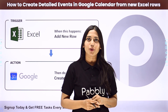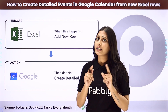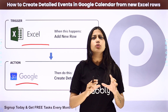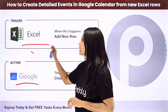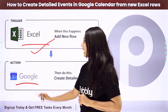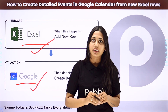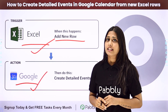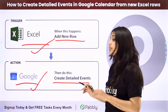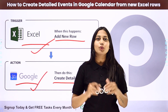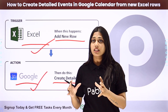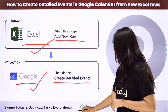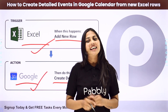I will make it easy for you. Today we will learn how to create an integration between MS Excel and Google Calendar using an automation software called Pabbly Connect. We will do this in such a way where MS Excel will be our trigger application and the action application is going to be Google Calendar. As soon as you add a new row in your MS Excel sheet, a detailed event will be created in your Google Calendar.